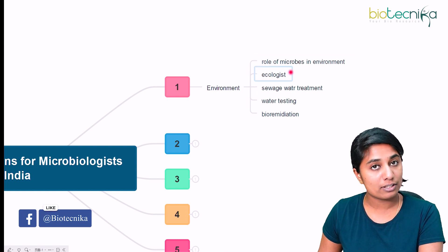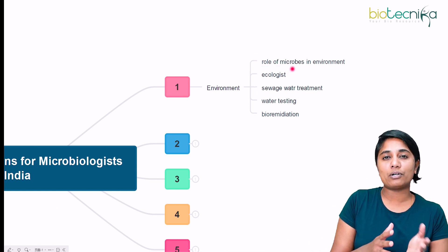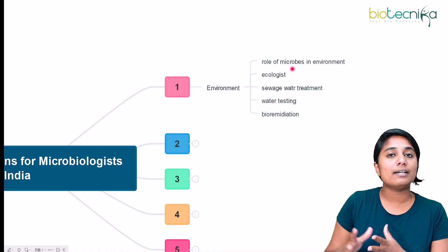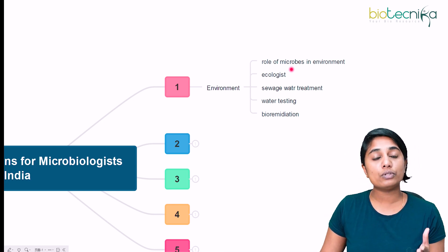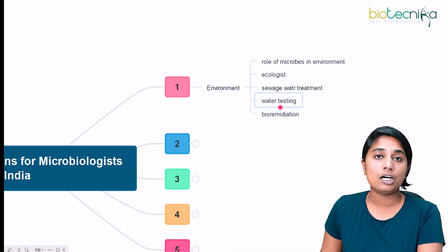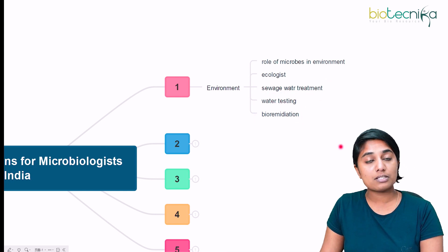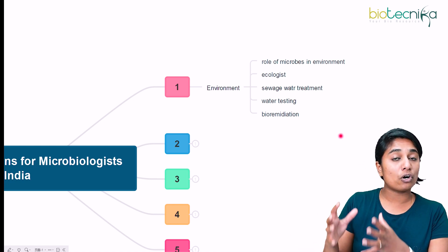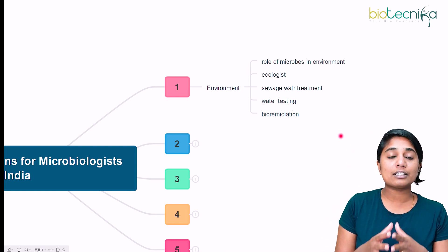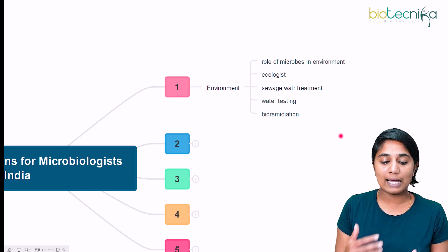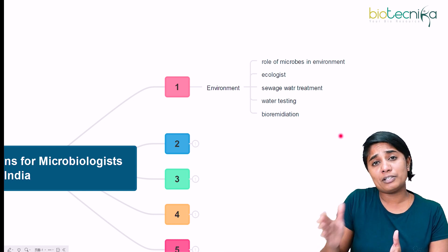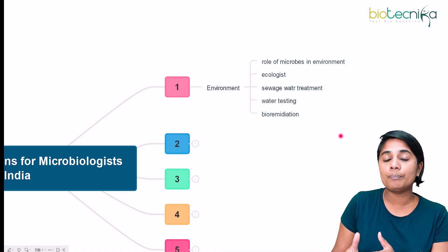Second, you can be an ecologist, studying the abundance and distribution of organisms in the ecosystem. Third, you can be involved in sewage water treatment, in government or private facilities. Next is water testing — testing the purity and quality of water. You can be involved in NGOs, government facilities, or private facilities that work on water testing.